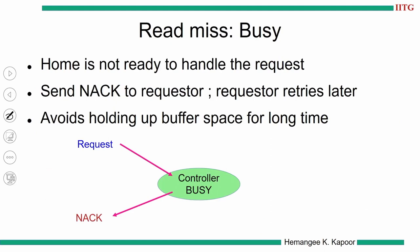The next directory state is busy. If the directory state is busy and a request comes, it is already servicing an existing request, and to manage serialization the directory says it will do one at a time and hence goes into the busy state. This is the easiest case to handle. Simply send a negative acknowledgement so that the requester will retry the request in future. The advantage of using NAKs is we do not need to hold up a lot of buffer space for all these pending requests.